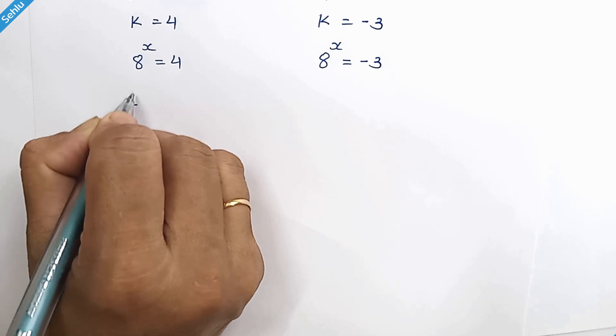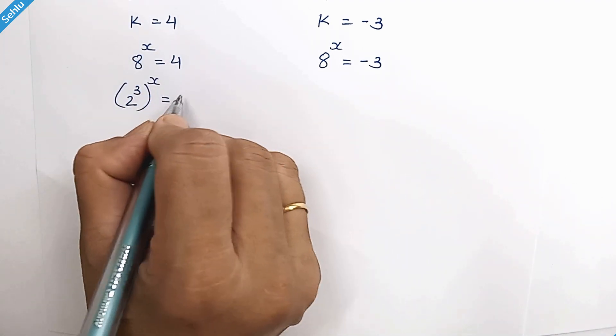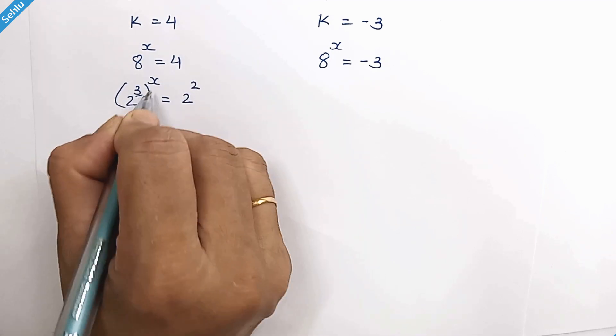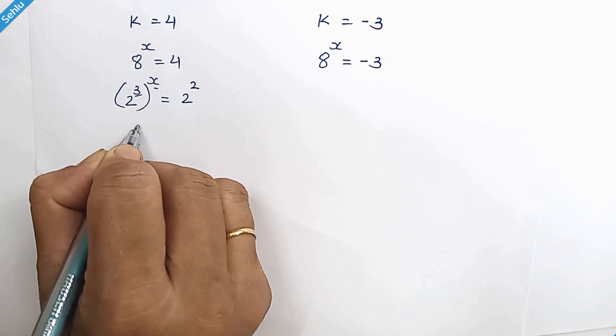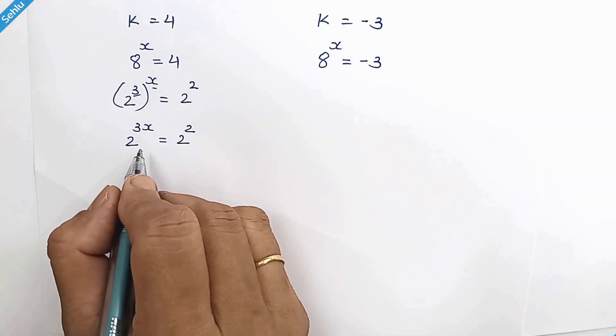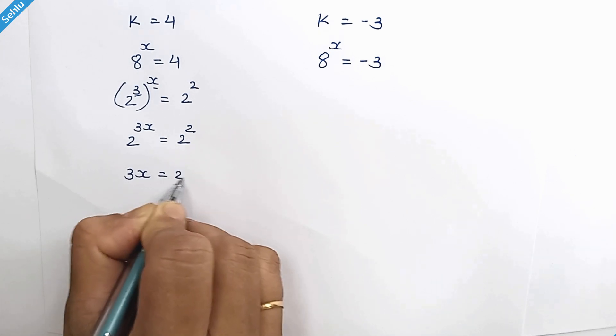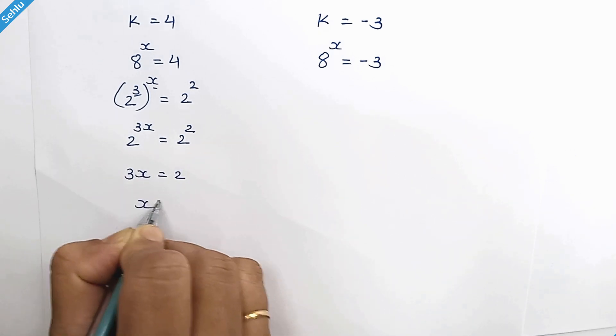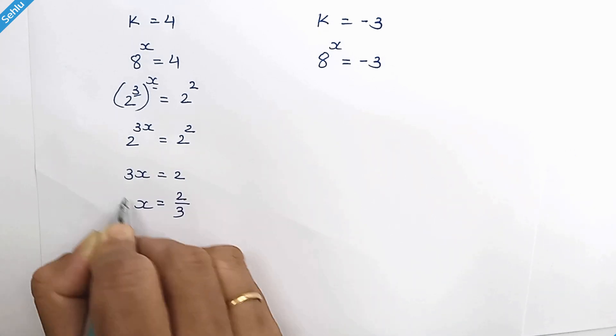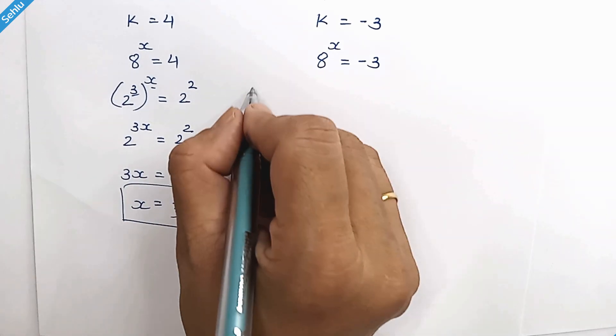And here 8 is 2 cube, so we can write 2 cube whole to the power x, and 4 is 2 square. This 2 can multiply, it's the same base we have, so let's equate 3x is equal to 2, so x is equal to 2 over 3 is the answer. Now let's verify this answer quickly.